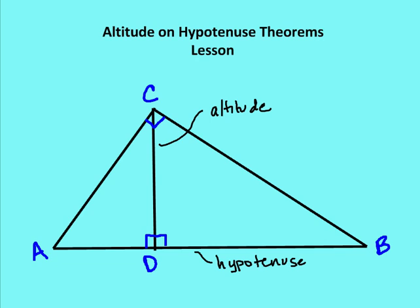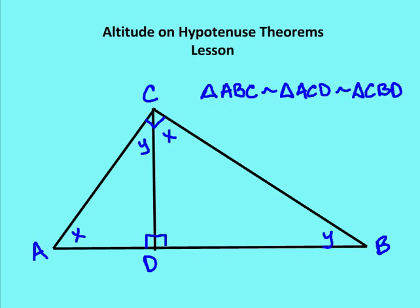Once we draw an altitude CD to AB, we have a host of similar triangles. We're going to define angle A as X and angle B as Y. We know that angle ACB is 90 degrees. So X plus Y plus 90 degrees is equal to 180 degrees.